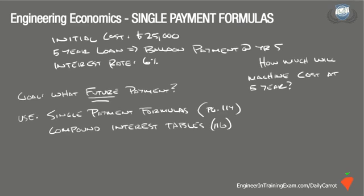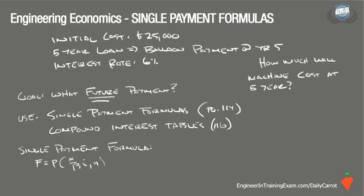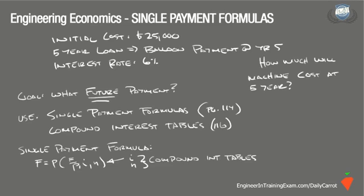This problem calls for the use of compound interest tables. The single payment compound formula written in functional notation for future worth is F equals P times (F/P, i, N), where the term F/P can be defined using the given values for interest and the period, referencing the compound interest table starting on page 116 of the NCEES Supplied Reference Handbook.